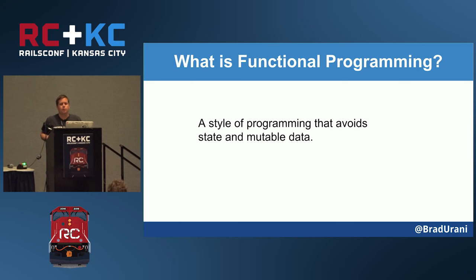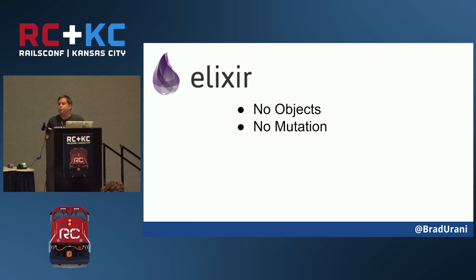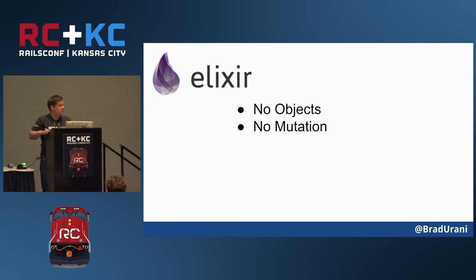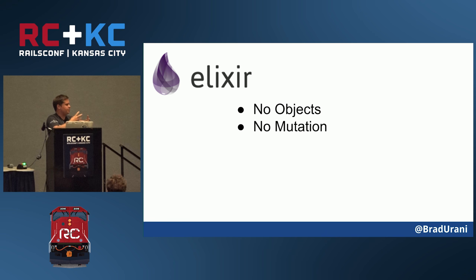Elixir is a functional language — a style of programming that avoids state and mutable data. If you're coming from Ruby, the things that will surprise you most are that Elixir has no objects. Ruby has modules and classes; Elixir only has modules, which also means there are no methods — it has functions, but not that encapsulation of methods and data in the same class. And no mutations: in Ruby you can change a hash value, but in Elixir if you have a struct and change a value, you get back a new struct every time. If you have a reference to the old one, it's still there — it uses immutable, persistent data structures.